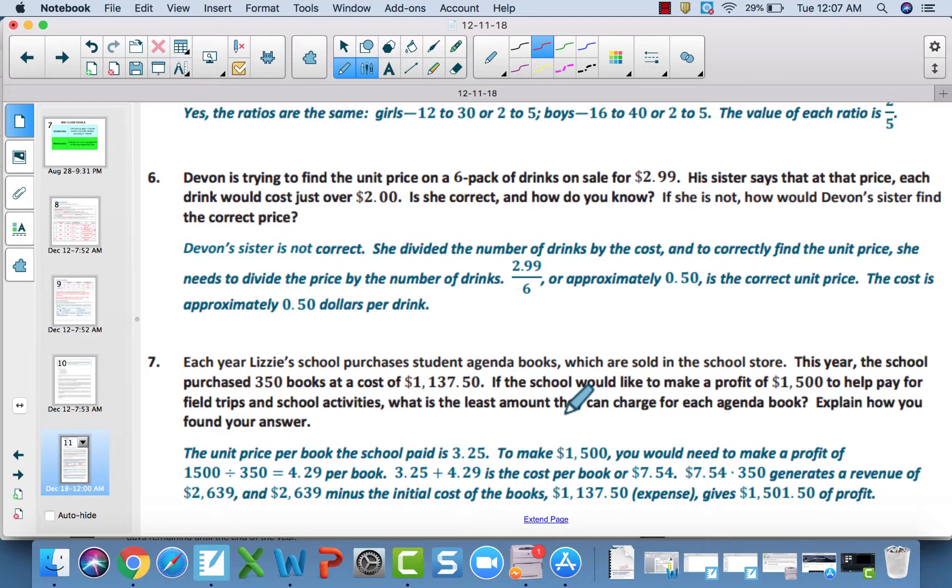Number seven. The correct answer here is approximately $7.54. The unit price per book the school paid, the cost per book for the school, is $3.25. To make $1,500, you would need to make a profit of $4.29 per book. That came from the 1,500 divided by the 350. You need to add those two to offset the cost, and that gets the $7.54. It is approximately $7.54 for number seven. And that wraps up module one, lesson one, in seventh grade math.